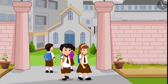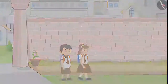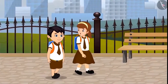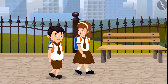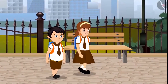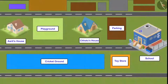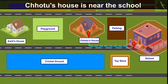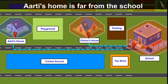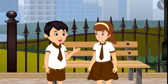Chotu and Aarti are walking home from school today. On the way back home, Aarti spoke to Chotu: 'Chotu, we leave from school to go home at the same time, but you always arrive early and I get home later. Why is it so?' Children, do you know why this happens? Chotu replies: 'Aarti, my house is near the school and your house is far from the school. So that's why I reach home early and it takes you more time to reach home.'